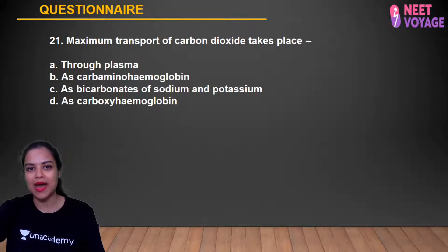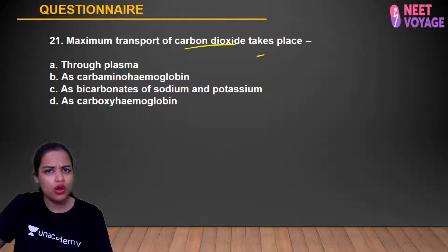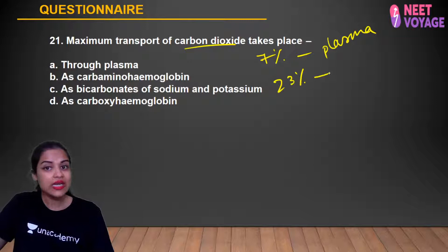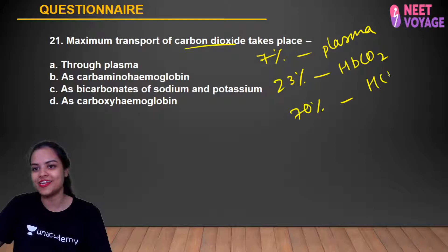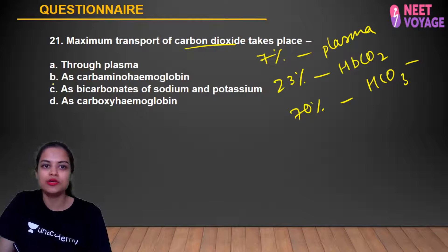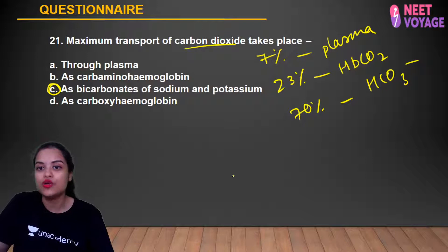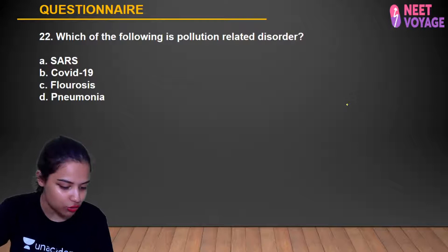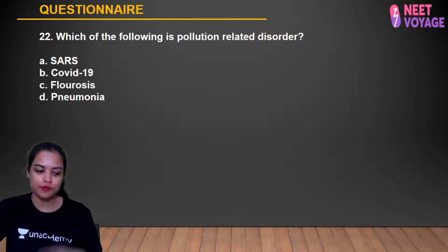Question 21: Maximum transport of carbon dioxide takes place how? 7% dissolves in plasma, 23% is transported as carbamino-hemoglobin, and 70% is transported as bicarbonate ions — specifically bicarbonates of sodium and potassium. So the maximum CO2 transport is as bicarbonate ions. C is the right answer. Anusha, Anshika, Shashank, Simran, and Sabah gave the correct answer.